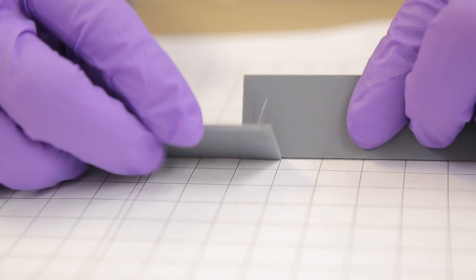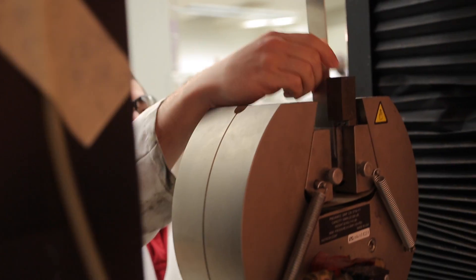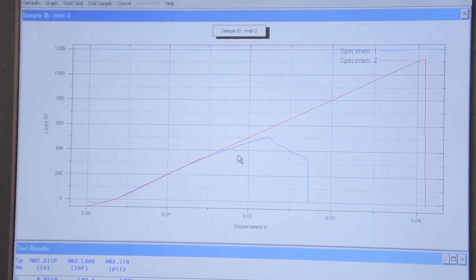One standard method for shear strength testing calls for the bonding of two test specimens overlapped by a specified area. The assembly is secured in a mechanical properties tester and is pulled in shear until failure. We record the load at breakpoint and calculate the corresponding shear stress.